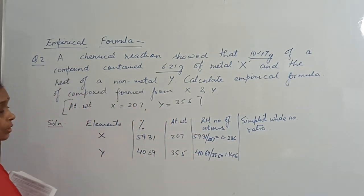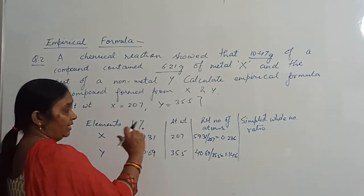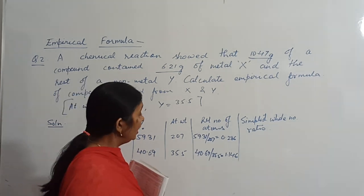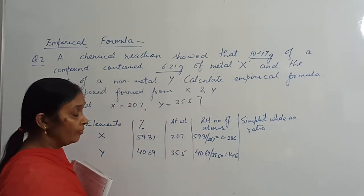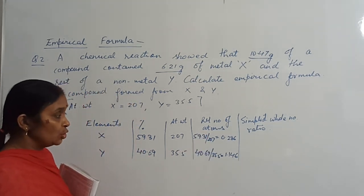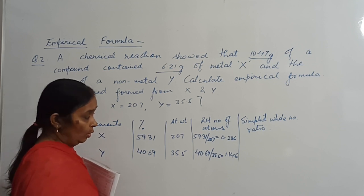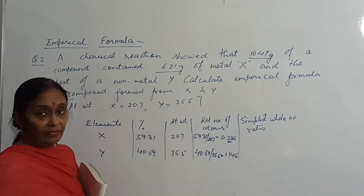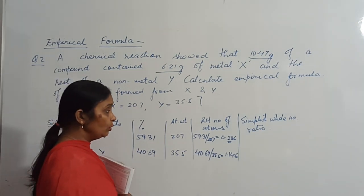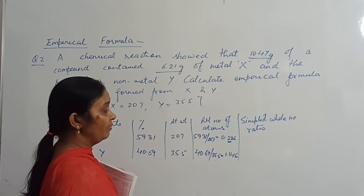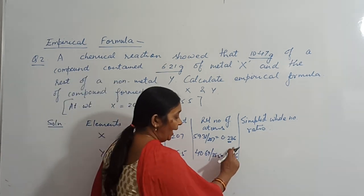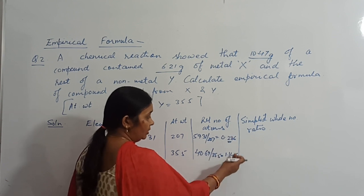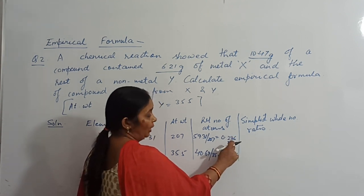So these are the values of the relative number of atoms of X and Y. Now we will have to find out the simplest whole number ratio of X and Y. For finding out simplest whole number ratio, what do you do? Whatever is the smallest figure out of these relative number of atoms, you divide all the figures by the smallest figure.